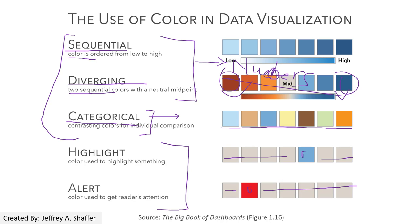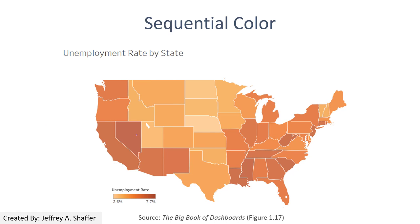For example, in the locator map we created in the previous lab, we highlighted Virginia by giving it a red color and put all the other states in gray, so that Virginia stands out within the United States.